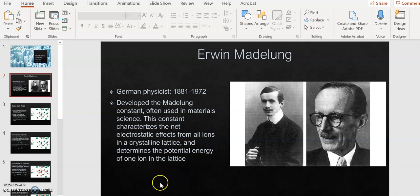This constant, which is different for different crystals, characterizes the net electrostatic effects from all ions in a crystalline lattice, and we're going to derive this constant by determining the potential energy for one ion in a lattice.